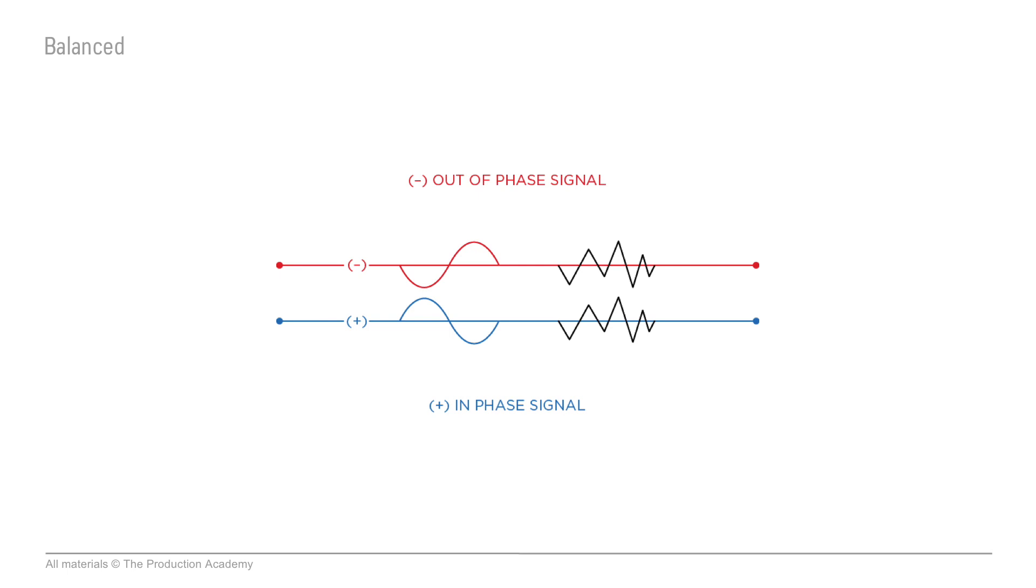But when our balanced signal reaches the destination, the audio circuit flips the phase of the second wire. So the noise ends up being out of phase and cancelled out, and the audio signal ends up being in phase.